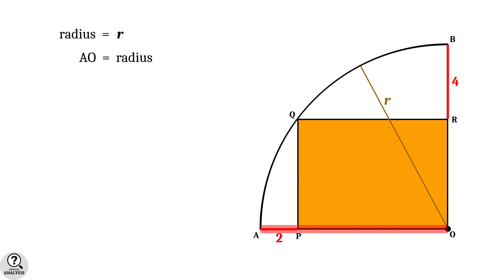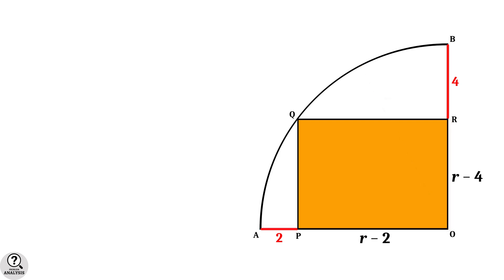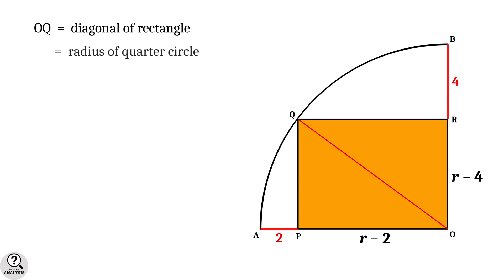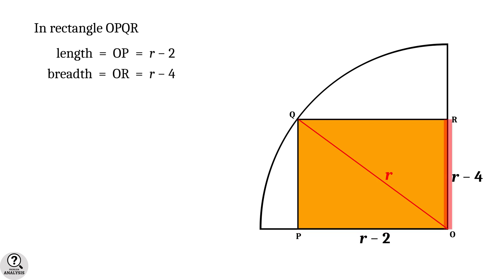The side AO is a radius and so equals R. Therefore, the length of the rectangle PO equals R minus 2. Similarly, side BO is also a radius equal to R, so the breadth RO equals R minus 4. Now consider the line OQ, which is the diagonal of the rectangle. Note that it is also a radius of the quarter circle and so equals R units. So in rectangle OPQR: length OP equals R minus 2, breadth OR equals R minus 4, and diagonal OQ equals R.